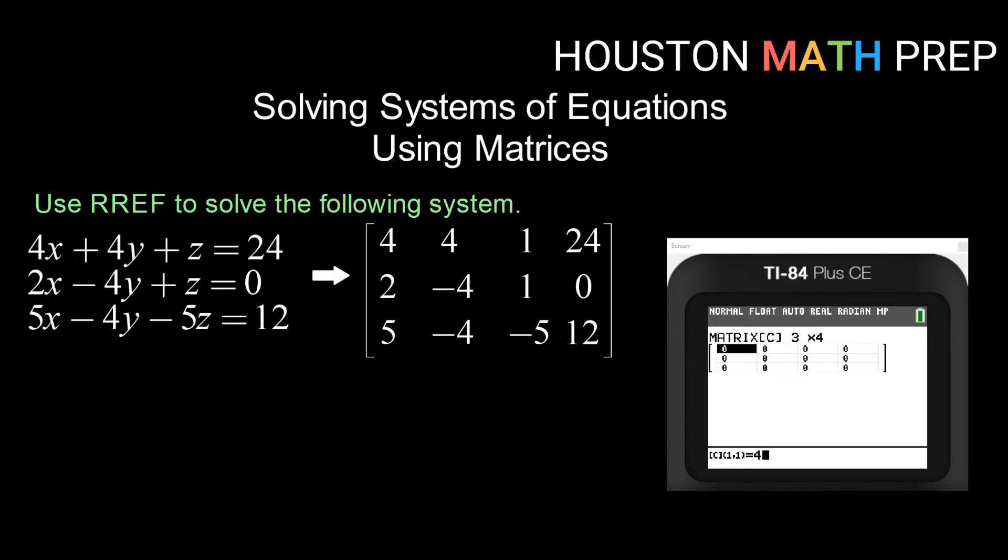And now I'm just entering in my values: four, four, one, 24. Two, negative four, one, zero. Five, negative four, negative five, 12. Okay, always do yourself the favor of checking that you've entered it in correctly. You don't have any mistypes. Looks good to me.